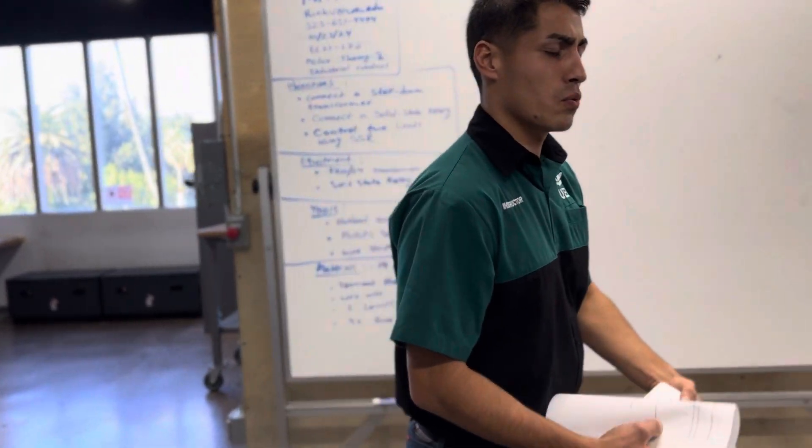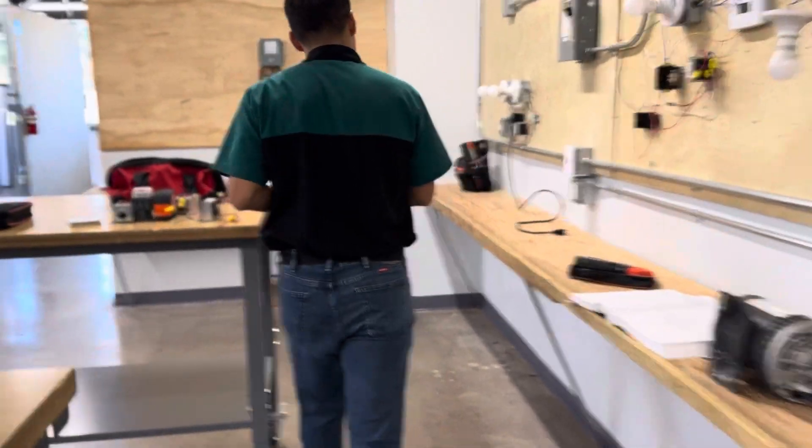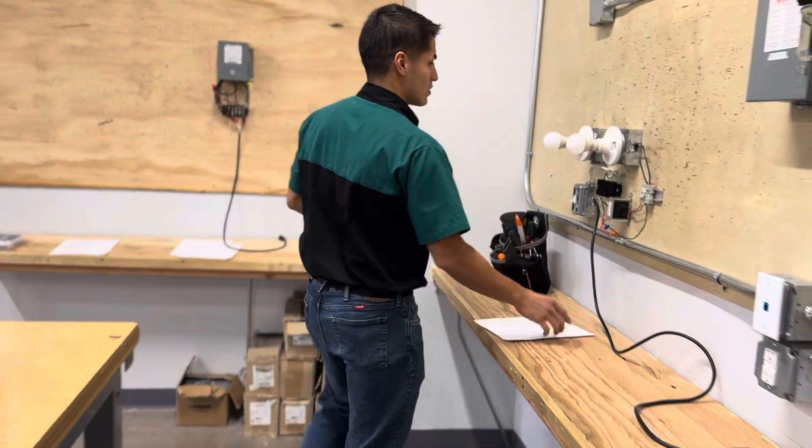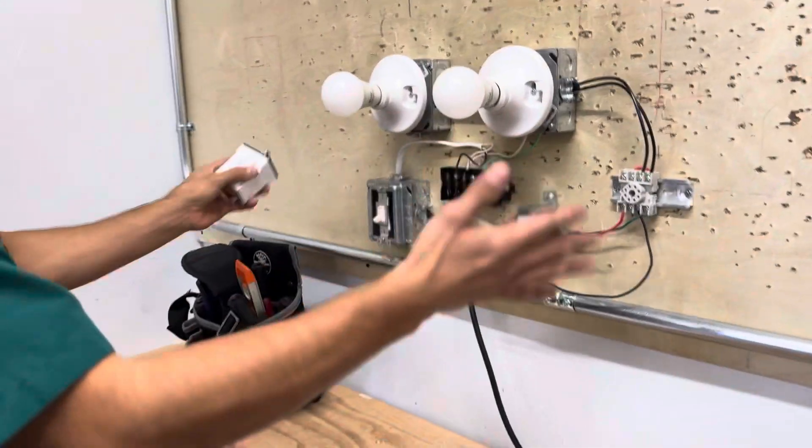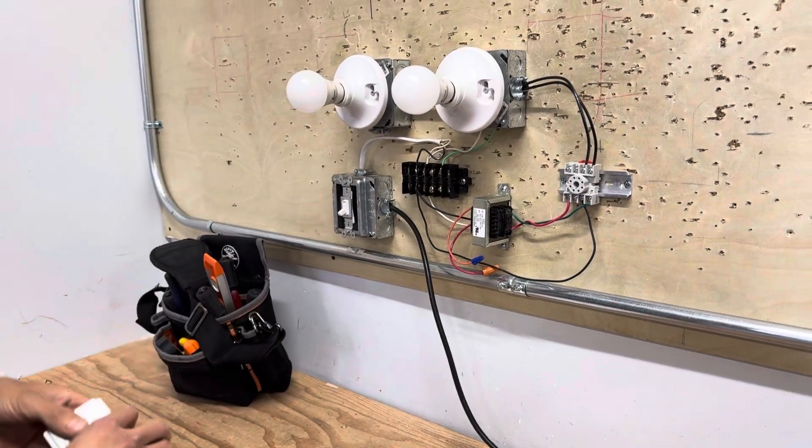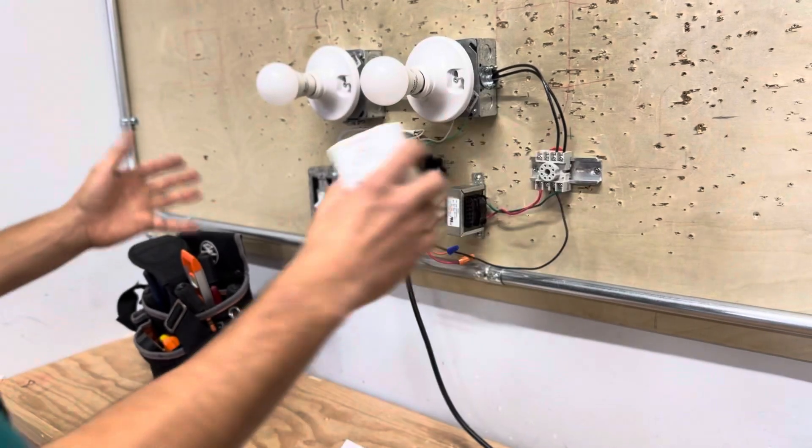So the idea is we want to control two loads using an 8-pin solid-state relay. So this is our setup here. Let's go over the different components and how they work before we look at the overall big picture of things.